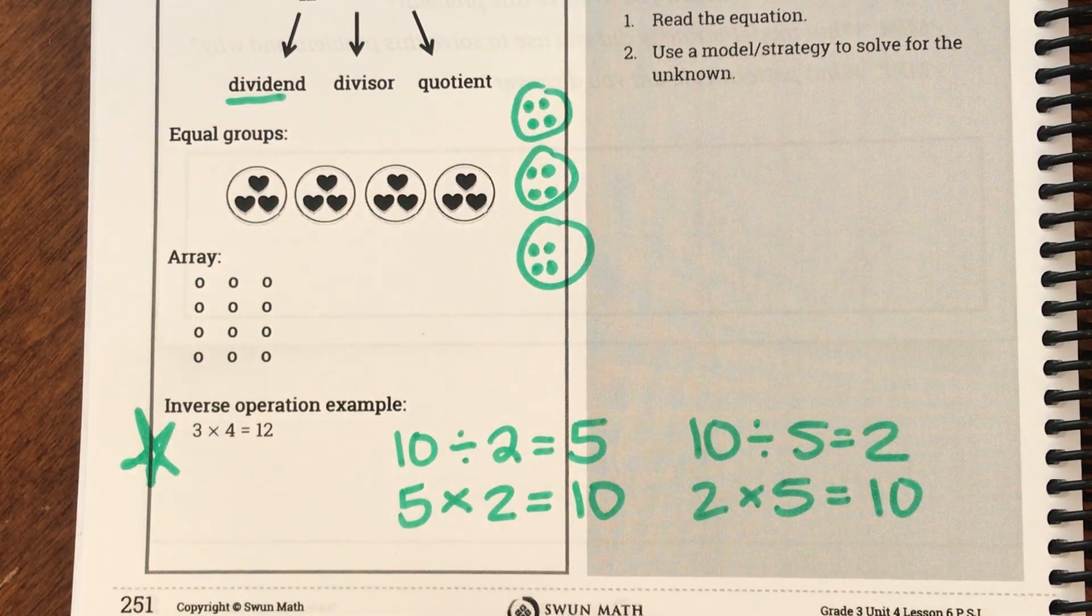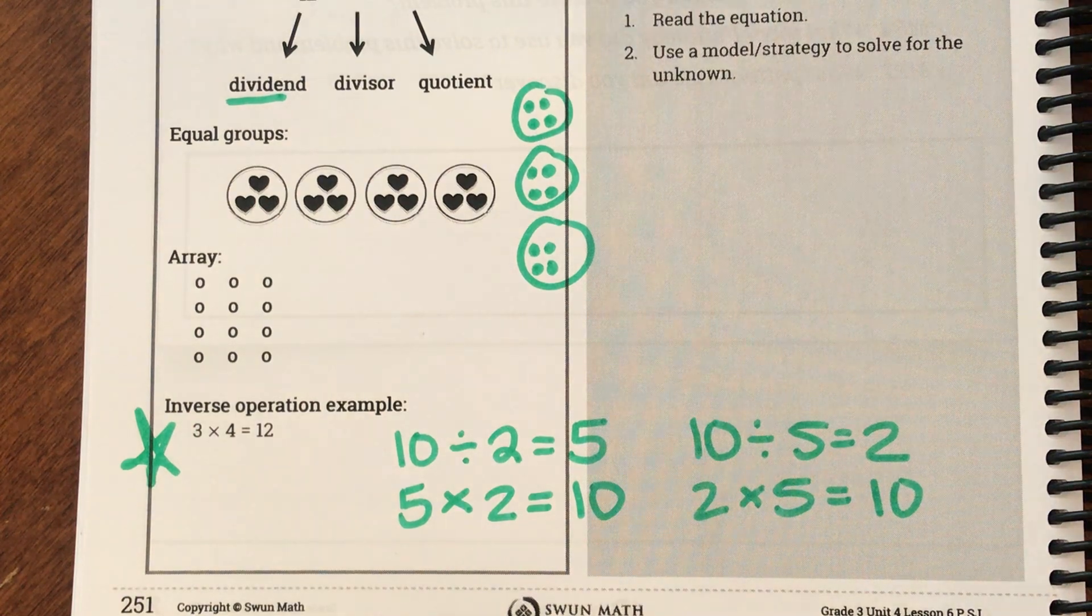What are the other numbers of that fact family? What's our other division one? Could we also say ten divided by five equals two? And then here we could say two times five equals ten. Those are all part of our fact family, and the multiplication and division are inverse operations. You're going to see Ms. Munoz use those inverse operations to help me today.